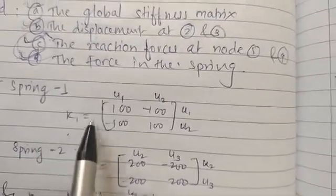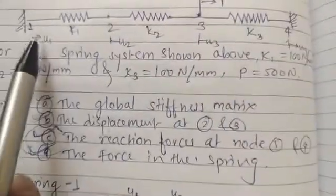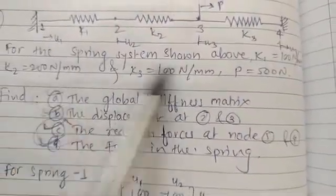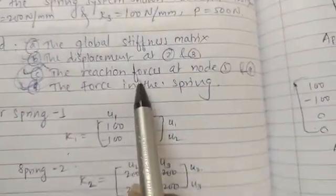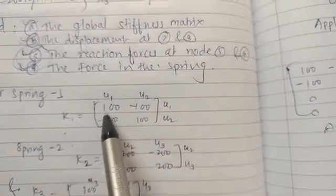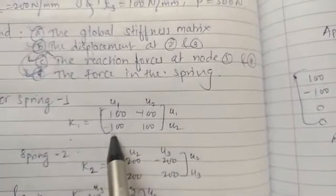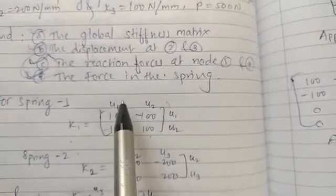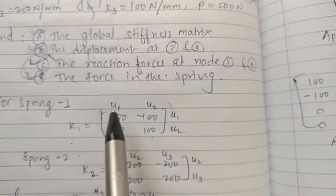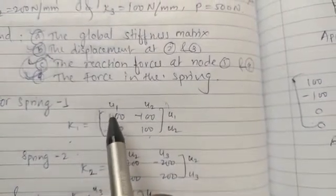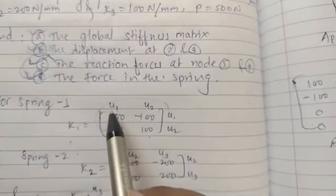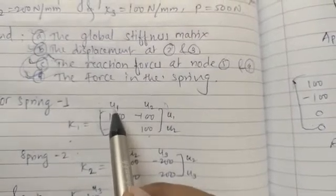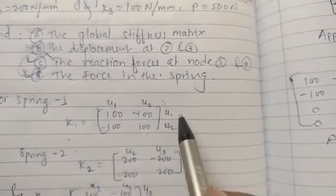For finding the stiffness coefficient for the first element, k1 is 100. We write the matrix as: [100, -100; -100, 100]. We write the respective displacements at the start and end nodes of the element. At the start it is u1 and at the end it is u2, so the rows and columns are labeled u1 and u2.